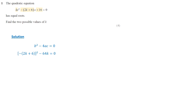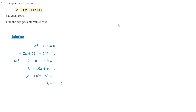Substituting these values into the formula and simplifying the expression, we get k squared minus 10k plus 9 equals 0. We can factor the expression as k minus 1 times k minus 9. Thus, the two possible values of k are 1 or 9.